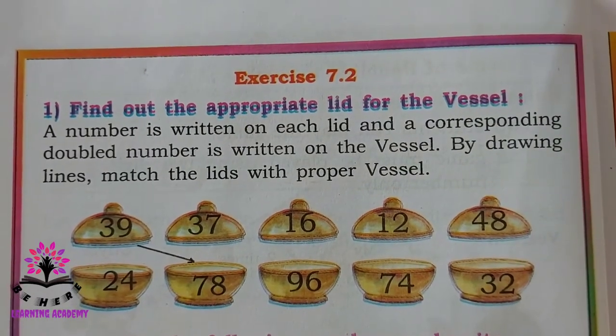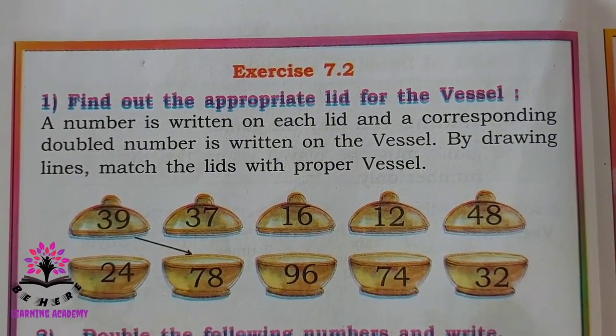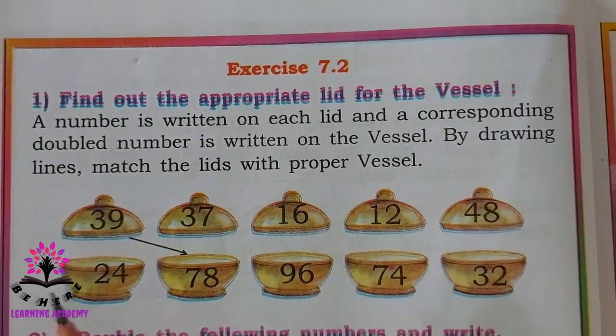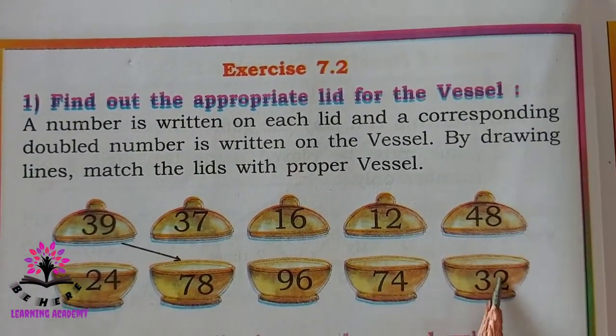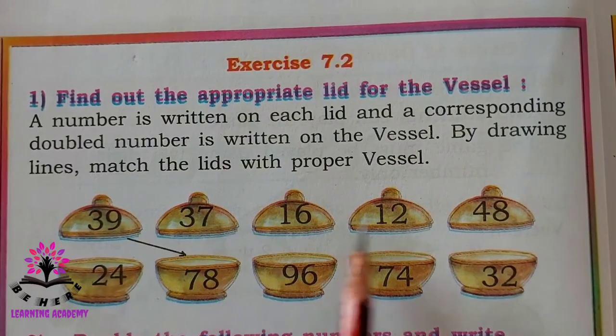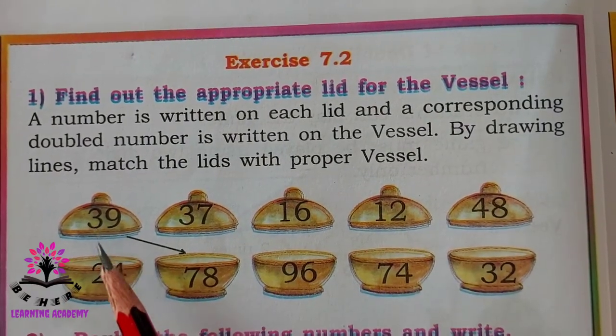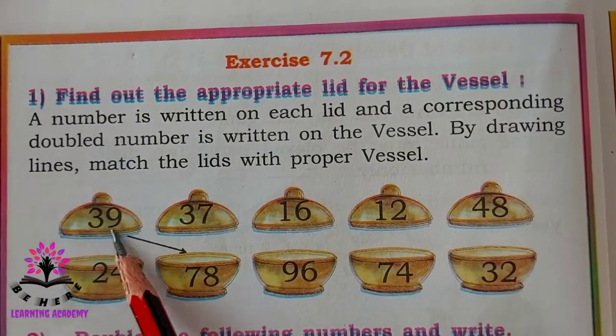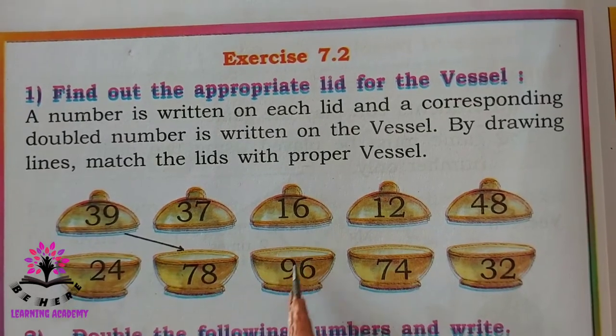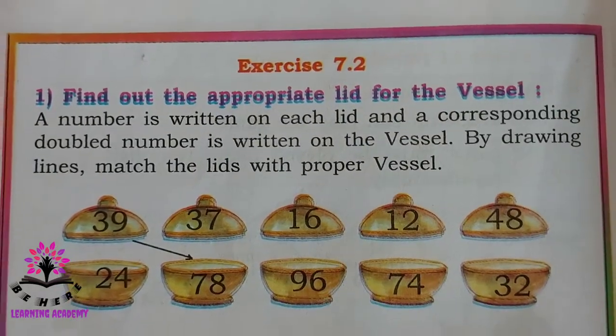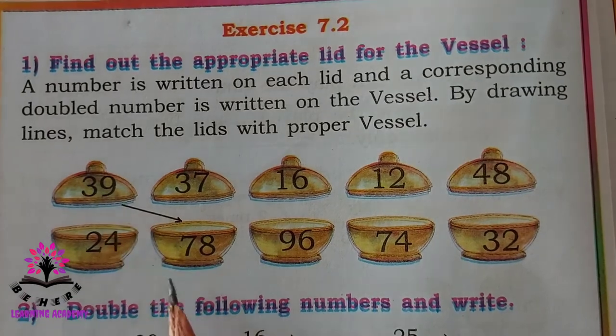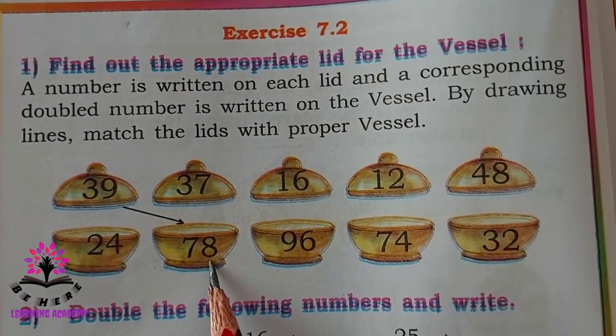Exercise 7.2: Find out the appropriate lid for the vessel. Now here the vessels are given and here the lid. Now this number you have to double it to find the vessel. So first one is done, when we double 39 answer will be 78.